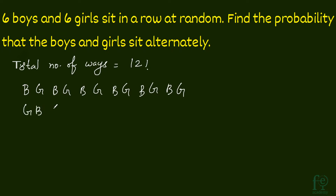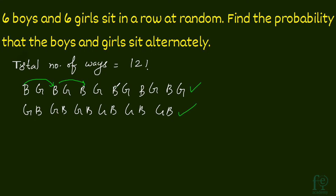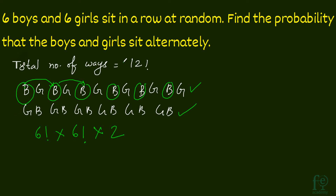There are two ways to arrange them alternately: either starting with boy-girl-boy-girl, or starting with girl-boy-girl-boy. So there are 2 ways. The 6 boys can be arranged in 6 factorial ways, and the girls can also be arranged in 6 factorial ways. So the favorable outcomes are 6 factorial into 6 factorial into 2, divided by 12 factorial.